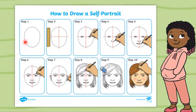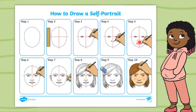To draw our face: first we draw an oval, then we draw a cross going through the middle, then we put our eyes on one line, put our nose halfway down, our nose halfway between the chin, our eyebrows, our ears, our hair. This gives us a way to do it step by step, so that if we couldn't do it before, if we follow the steps, then we can.